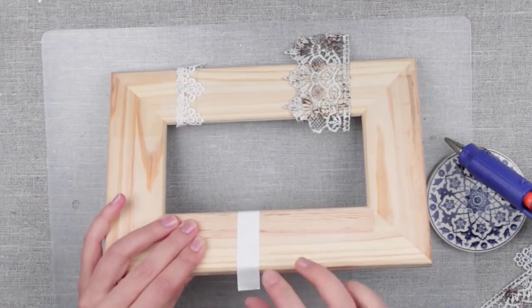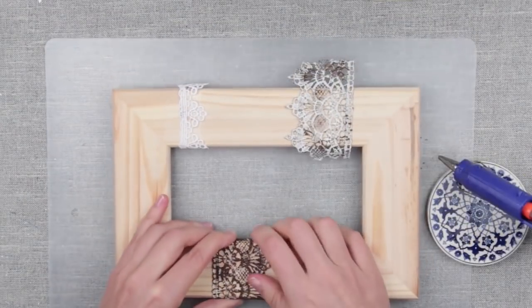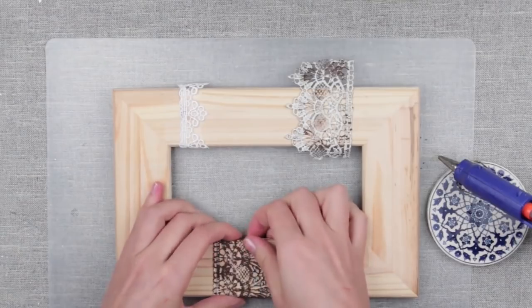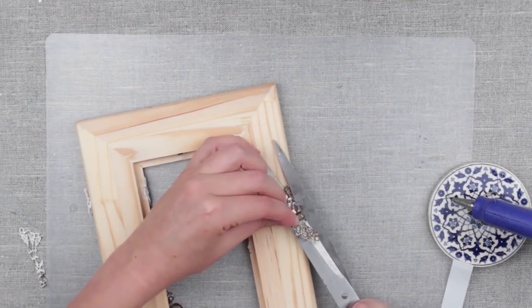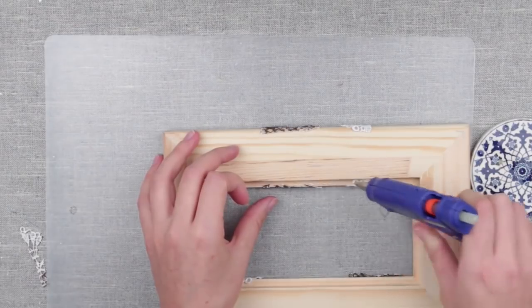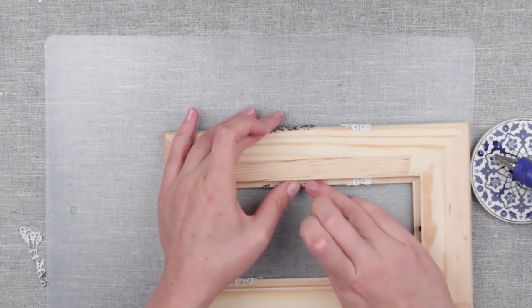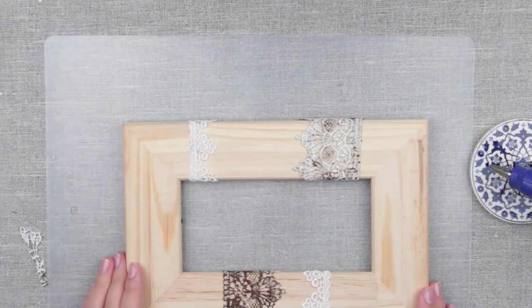Place the lace on the opposite side. Cut off the excess on the back. Attach the loose ends with a hot glue gun. We've made a chevron-like pattern.